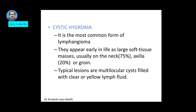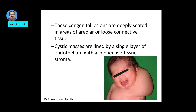The third variant is the most common form of lymphangioma, known as cystic hygroma. It appears early in life and presents as a large soft tissue mass. In 75% of cases it appears in the neck, in 20% in the axilla, and the remainder are in the groin and other sites. The typical lesion is a multilocular cyst filled with clear or yellow coloured lymph fluid. These lesions are deeply seated in areas of loose connective tissue, lined by a single layer of endothelium with connective tissue stroma.